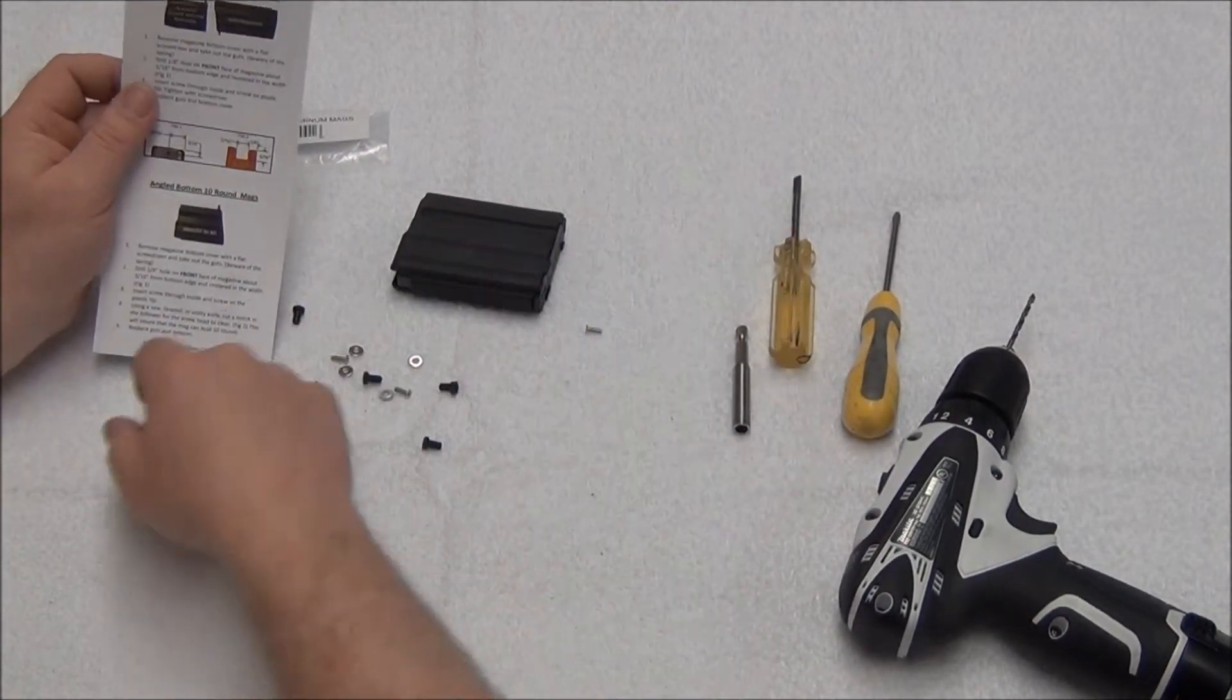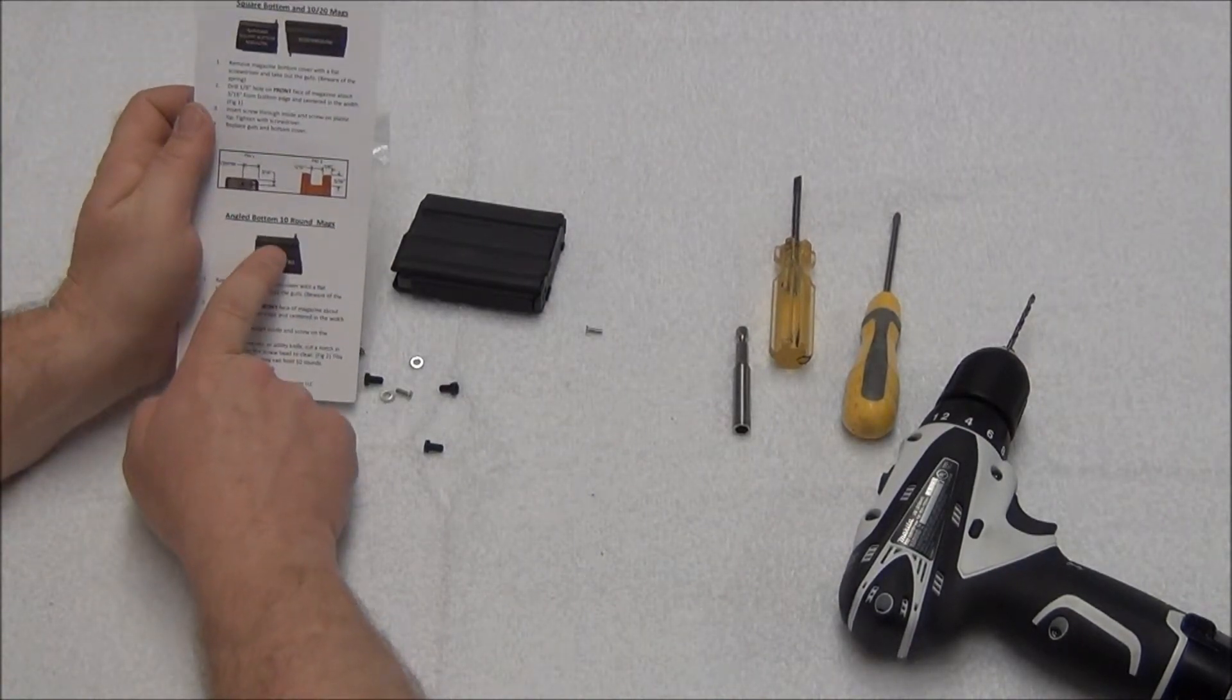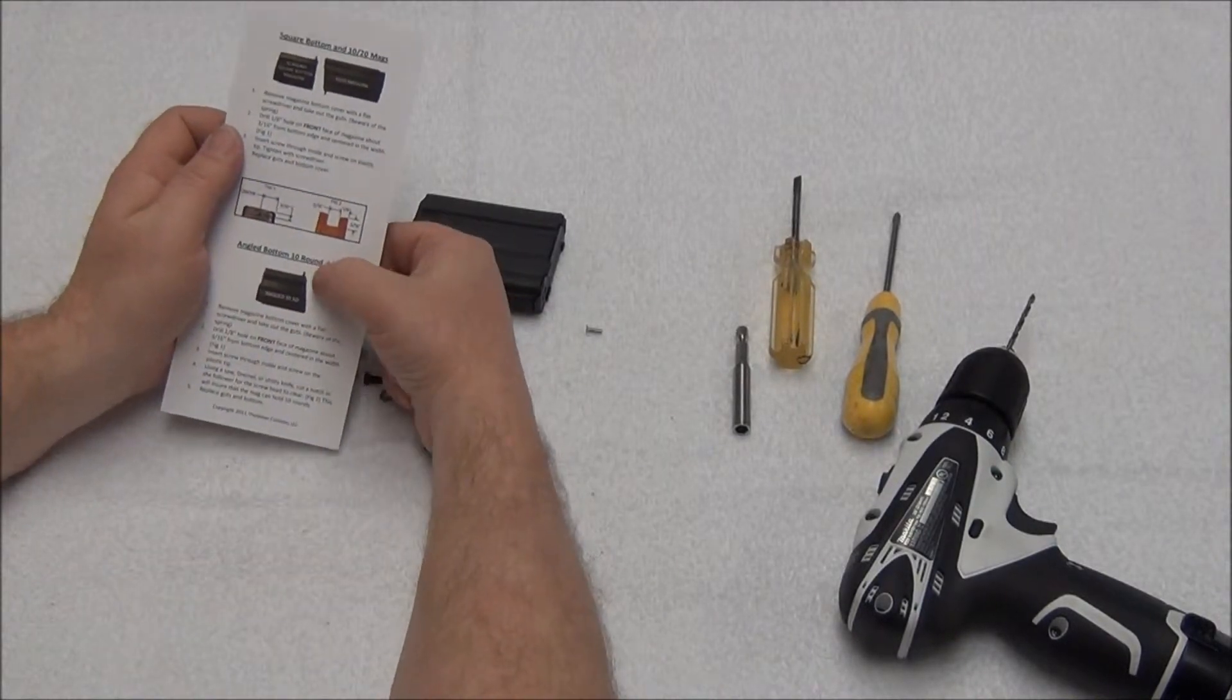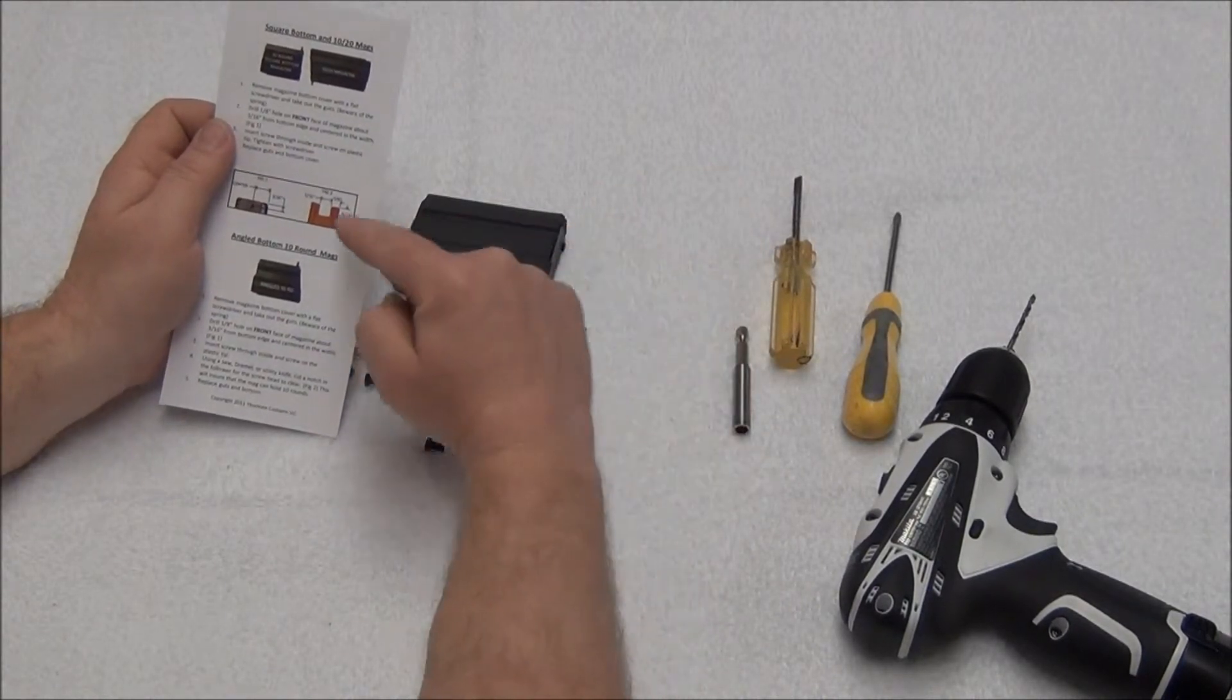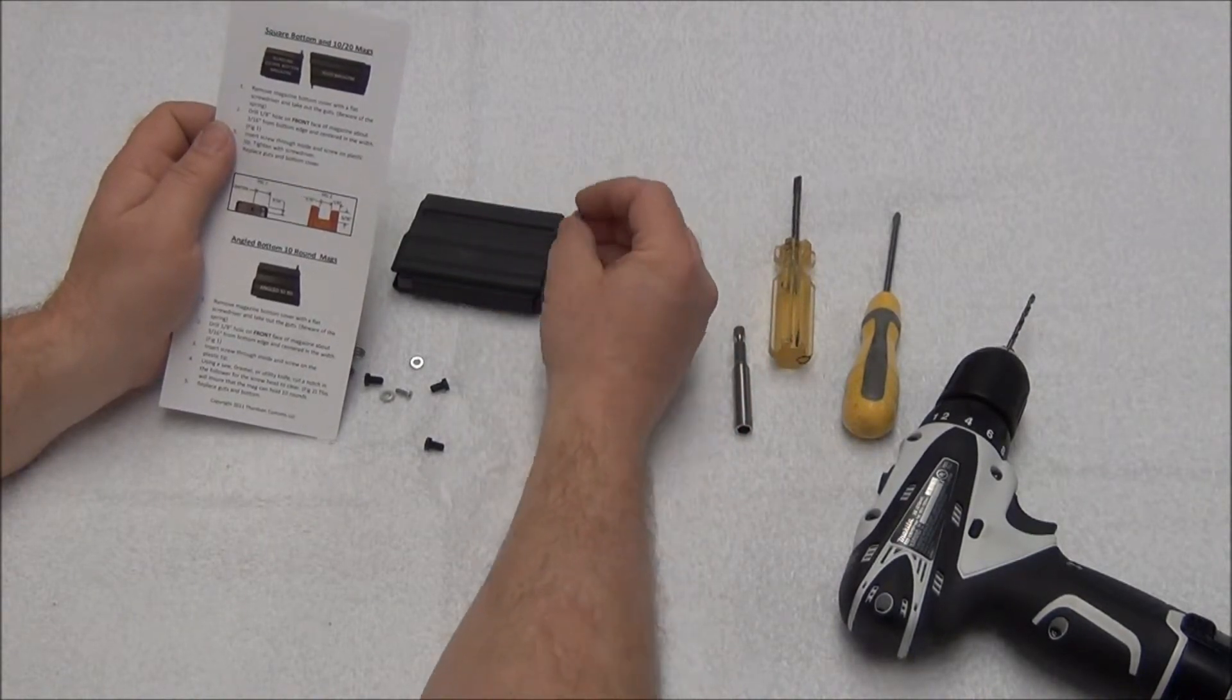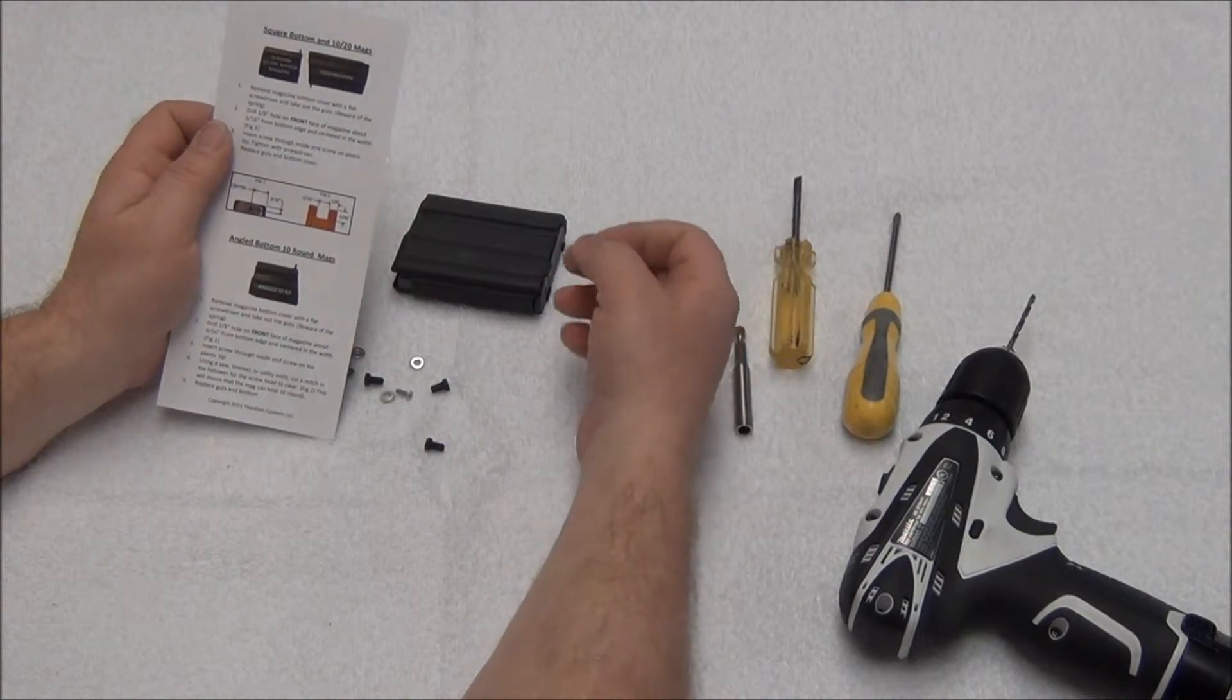We have found in some cases that the angled bottom 10 rounders, every once in a while, do have a problem with the follower coming right down to that edge and the screw head interfering with the follower. Sometimes it requires a notch cut in it. But the best way to know is to go ahead and install your UBBT on the magazine and fully assemble it.